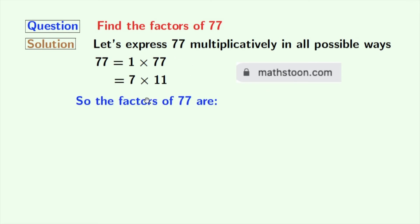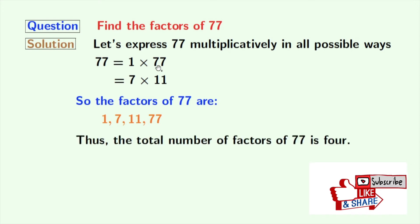Look that we have all the factors of 77 which are 1, 7, 11 and 77. So the total number of factors of 77 is 4.